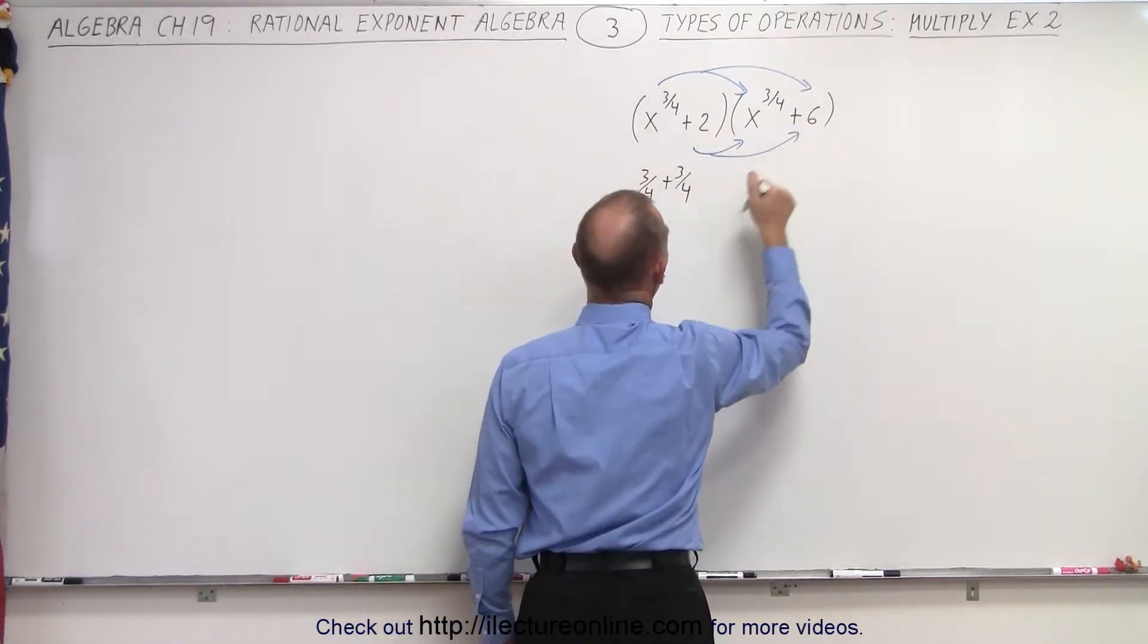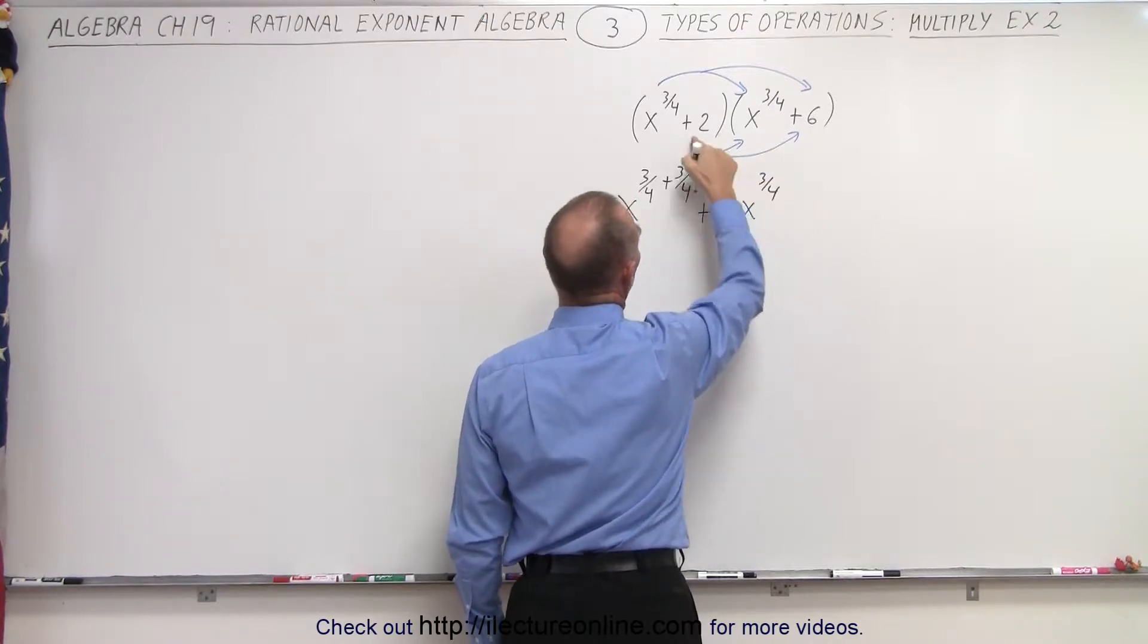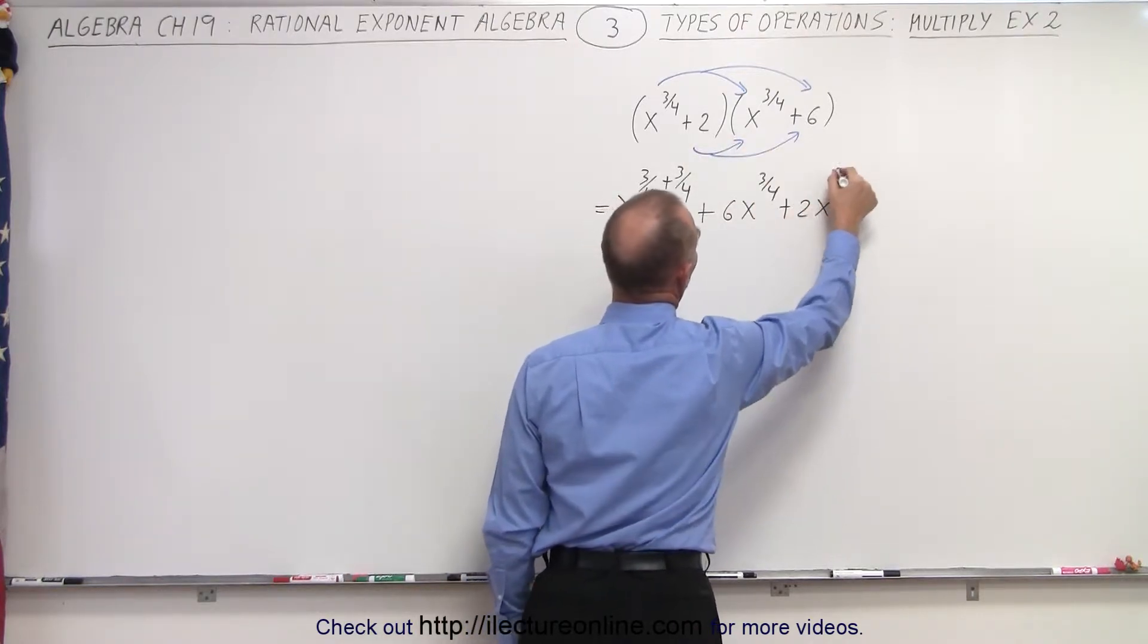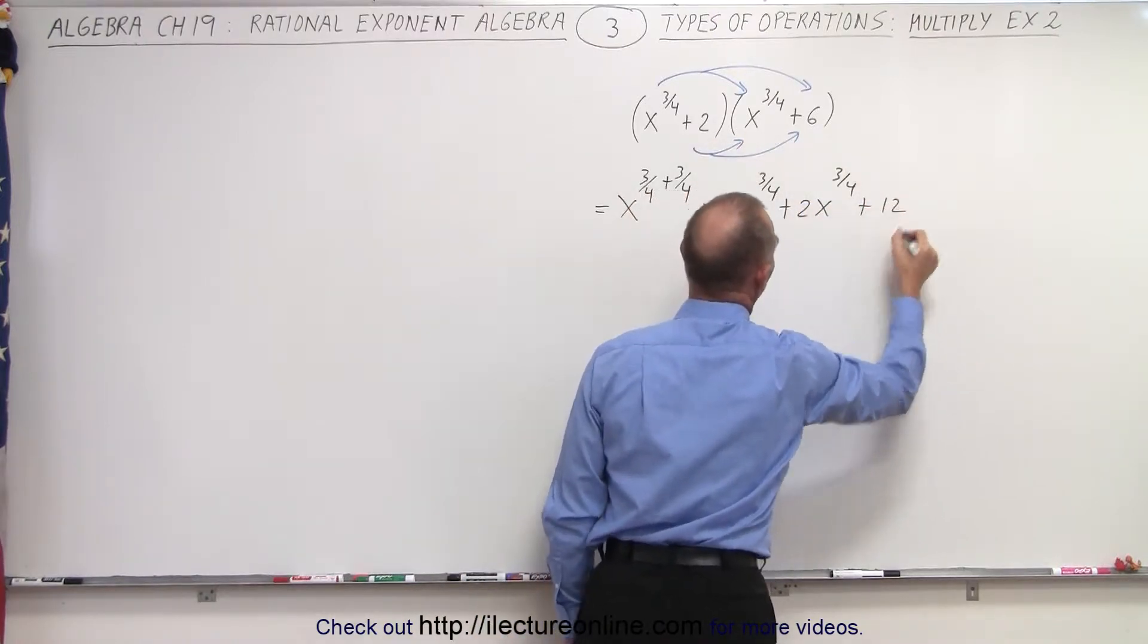Then x to the 3 quarters times 6 will give us plus 6x to the 3 quarters. Then 2 times this gives us plus 2x to the 3 quarters, and then 2 times 6, of course, is plus 12. That's the easy part.